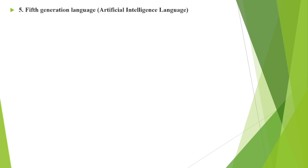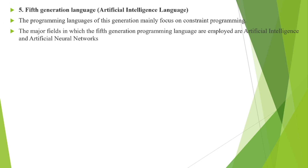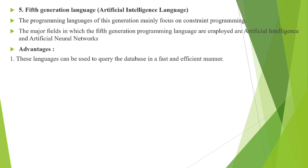The fifth generation programming language is an artificial intelligence language, very close to human language. This generation mainly focuses on constraint programming and is employed in artificial intelligence and artificial neural networks. Most of the coding is predefined — you just drag and drop elements while only putting in the logic part. These languages can also query databases in a fast and efficient manner.